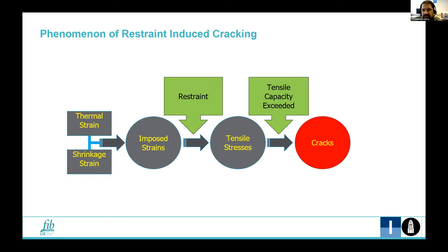Concrete undergoes volume change that is significant during early age but continues throughout the life of structures. This volume change is composed of thermal and shrinkage strains occurring in the concrete and these are commonly referred to as imposed strain.